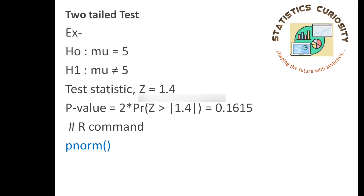Now let's see how you can obtain the p-value for the two tail test. For the two tail test, the alternative hypothesis contains the not equal to sign — here H1: μ ≠ 5. Let's suppose the test statistic is z = 1.4. Then the p-value will be 2 times the probability of z greater than the modulus of 1.4. Remember, in the two tail test when the alternative hypothesis contains the not equal to sign, if your test statistic is negative — say minus 1.4 — then while solving for the p-value you have to take it as plus 1.4 because of the modulus sign. You have to take the positive value of the test statistic.